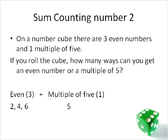Again, it's a sum question, so we're adding together. We add together the three even numbers — two, four, and six — and the one multiple of five, which is five. Since these two are not the same options, we add them together and get a total of four different options. So there are four different ways you could roll either an even number or a multiple of five.